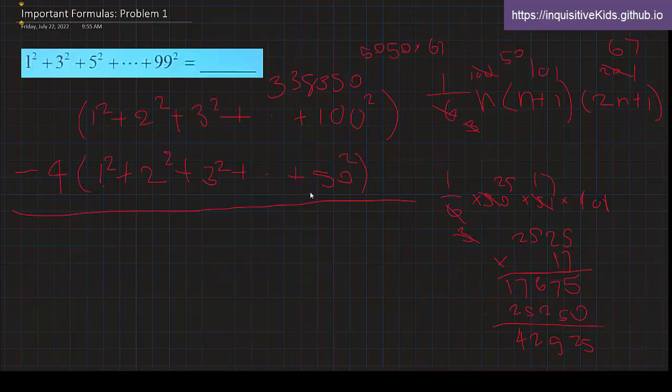But remember, it's 4 times that. So what is 42,925 times 4? That's equal to, alright, that's equal to 171,700.